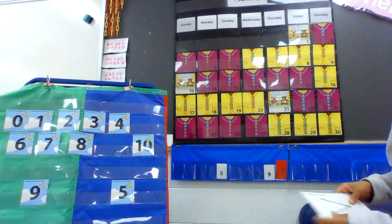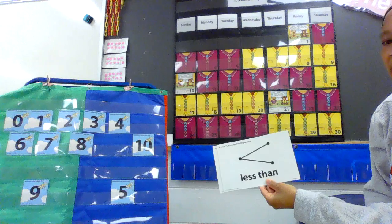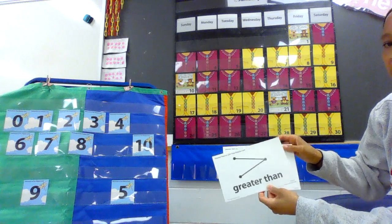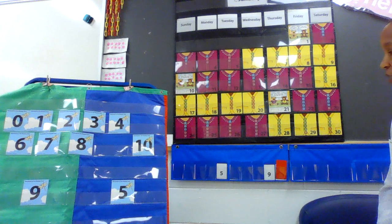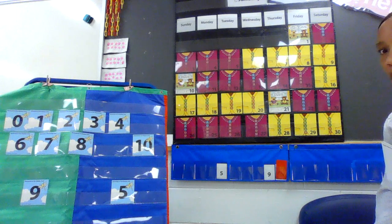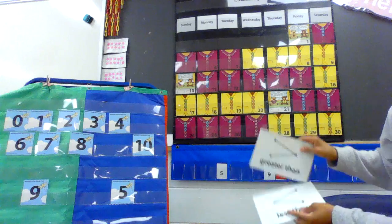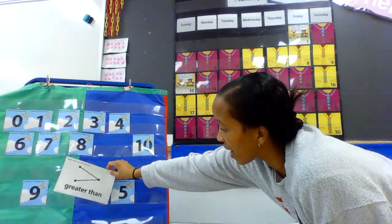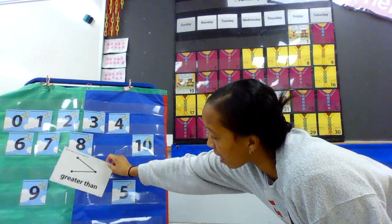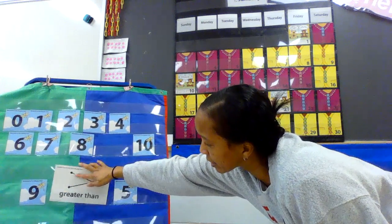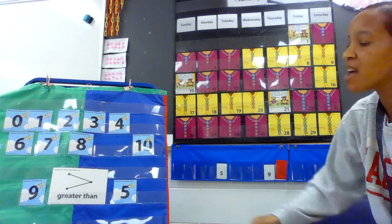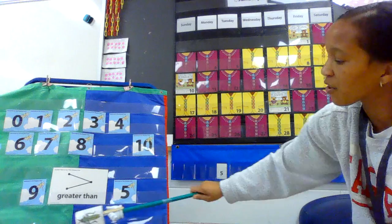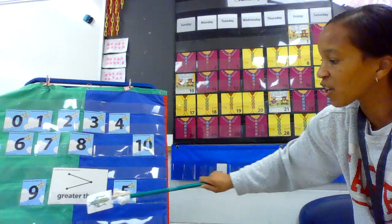We have to decide: would nine be greater than or less than five? Remember, you can look at the number line — whichever number is last would be the bigger number, whichever number is first would be the smaller number. Hopefully you said nine is greater than five. That open alligator mouth would be opened towards the bigger number — that alligator is going to eat that nine. Nine is greater than five.